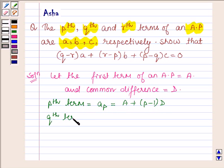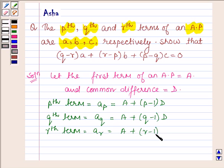qth term will be a_q which is equal to A + (q-1)D and the rth term is equal to a_r which is A + (r-1)D.